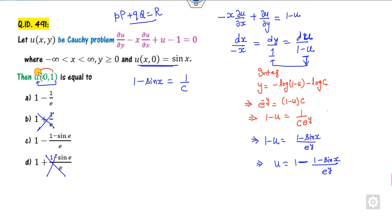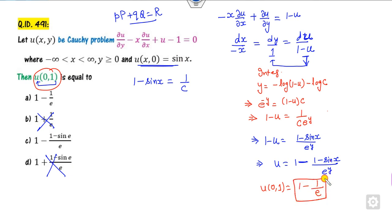Now we find u(0, 1). Since sin(0) is 0 and e raised to power 1 is e, the answer is 1 minus 1/e, which is the right answer. So this is a very simple task — no need to solve the equation separately, just integrate to find u.